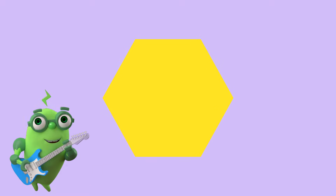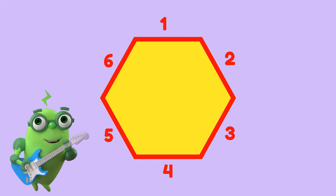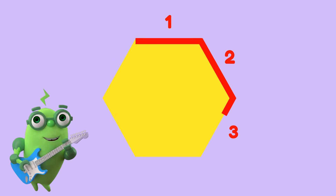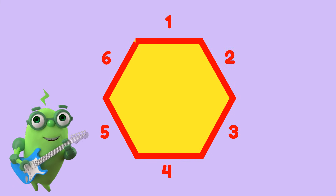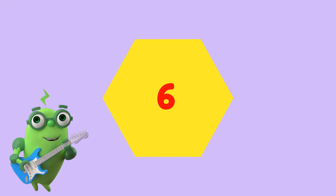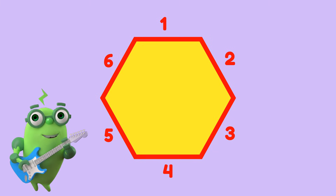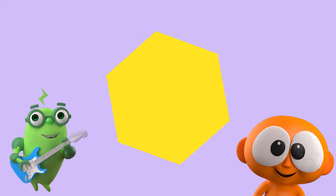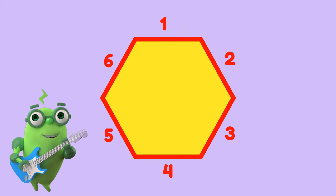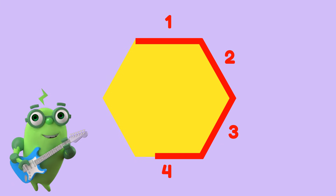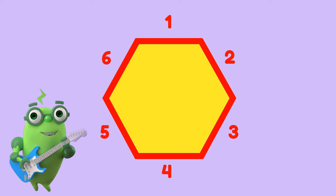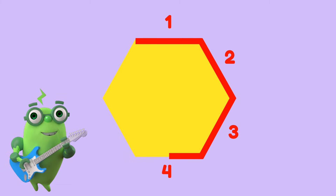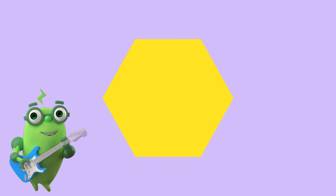A hexagon has six sides. Can you count all six sides? One, two, three, four, five, six sides. One, two, three, four, five, six sides. A hexagon has six sides. Can you count all six sides? One, two, three, four, five, six sides. One, two, three, four, five, six sides. A hexagon!